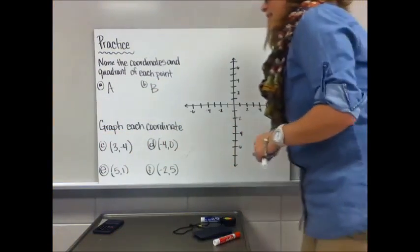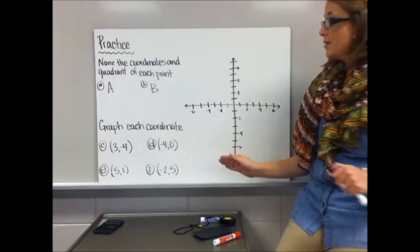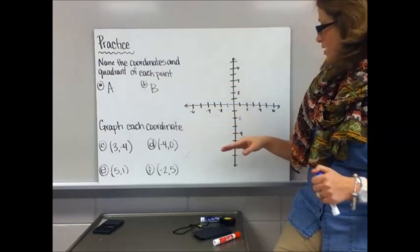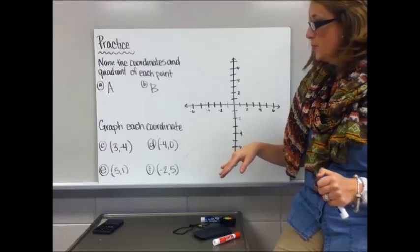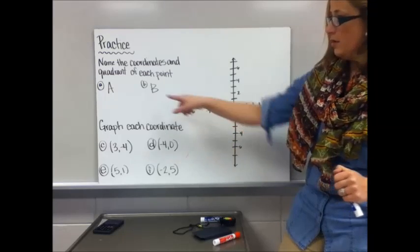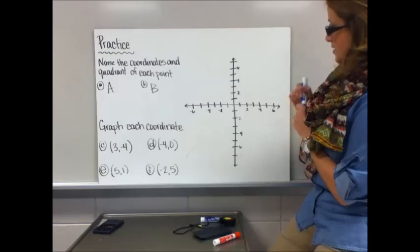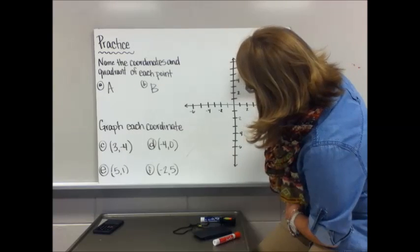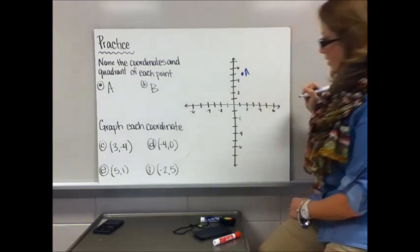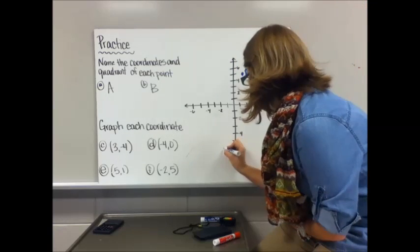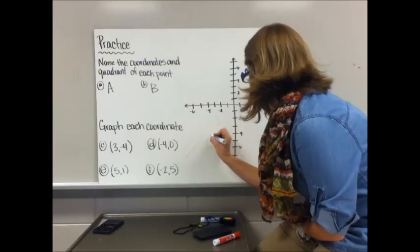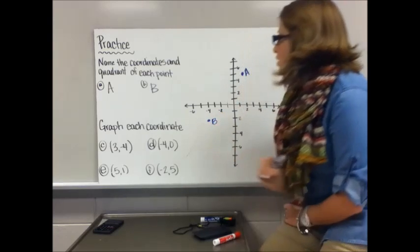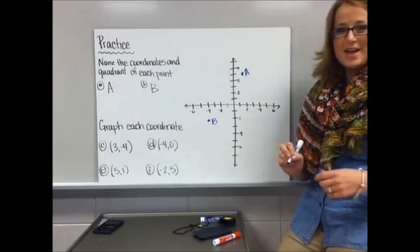Okay, now for practicing. Again, go ahead and draw this coordinate plane. Draw another coordinate plane. And then try to name the coordinates and the quadrant of each point and graph each coordinate. Looks like I didn't plot these in the first place. Let's pick a spot for A and B. Put point A right there and point B right there. Okay, now you can practice it.